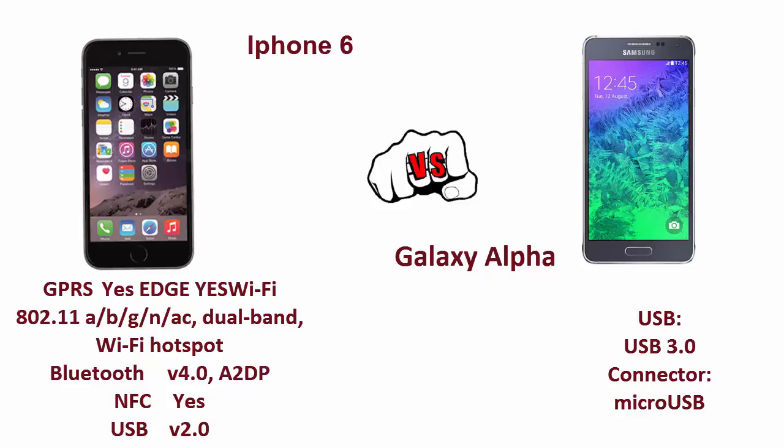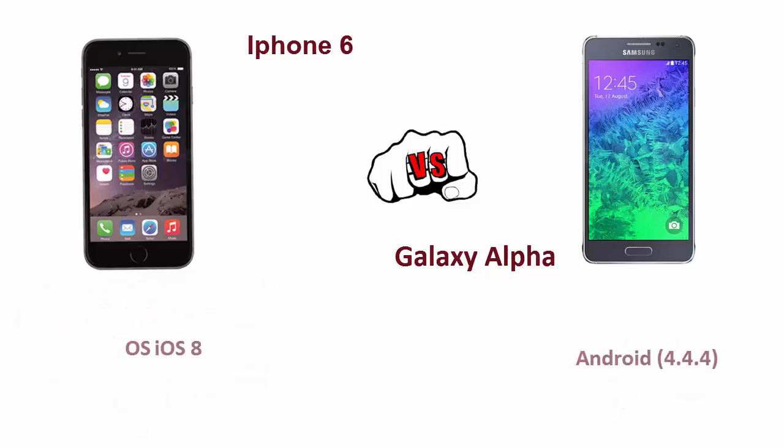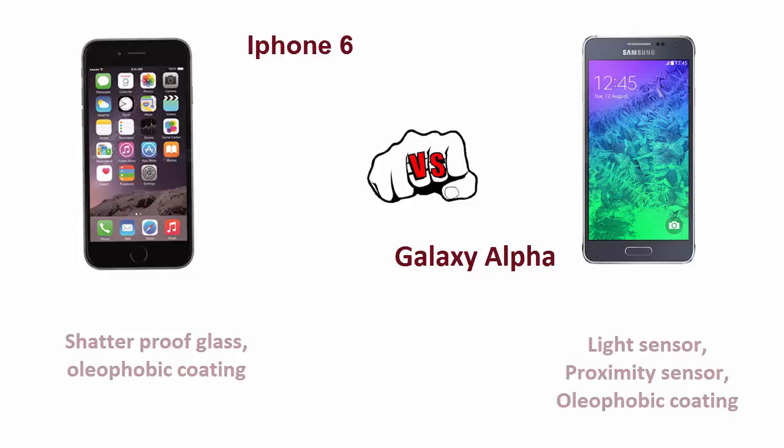The iPhone 6 runs on iOS 8 whereas the Galaxy Alpha runs on Android 4.4.4 KitKat. The Galaxy Alpha has features like a light sensor, proximity sensor, and oleophobic coating, whereas the iPhone 6 has shatterproof glass and also oleophobic coating.